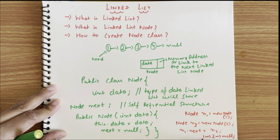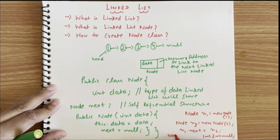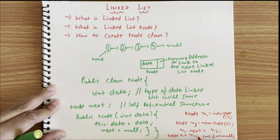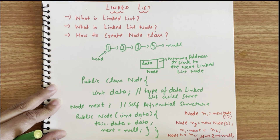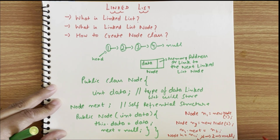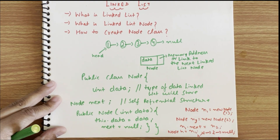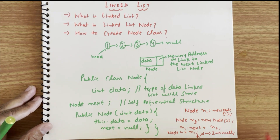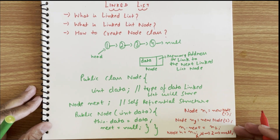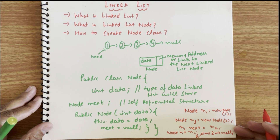We also need to define a head, so we write: Node head = n1. We are defining the head here. This is normally how your linked list will be created and formed. I hope you guys understand this. Let us know in the video comments if you have any queries or questions. Thank you.